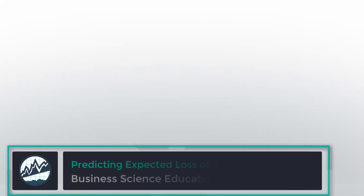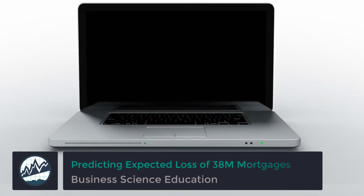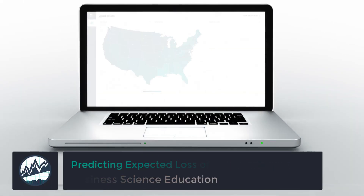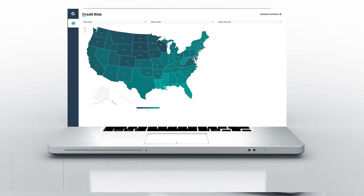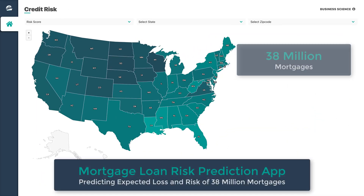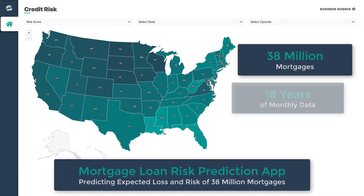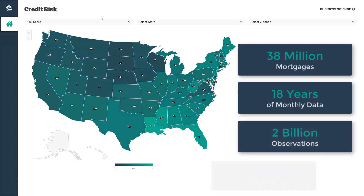Welcome to this overview of the Mortgage Loan Prediction app. This web app predicts the expected loss of default for 38 million mortgages in the U.S.